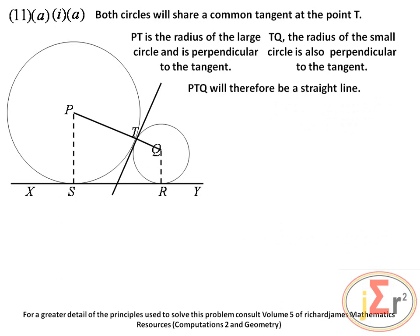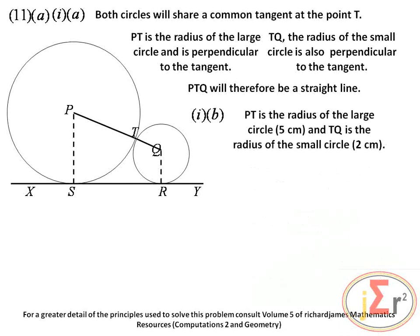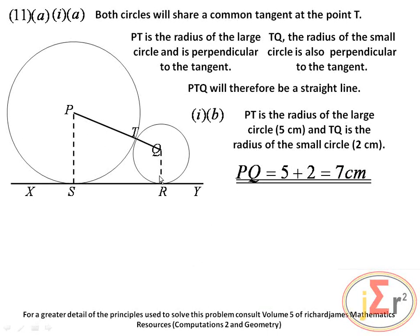Since both radii are perpendicular to the common tangent at the same point, P, T, Q is therefore a straight line. PQ equals PT plus TQ equals 5 plus 2 equals 7 centimeters. We also need to state why PS is parallel to QR. The line XY is a tangent to both circles, and PS and QR are radii of their respective circles, both perpendicular to line XY, therefore parallel to each other.